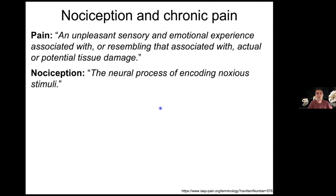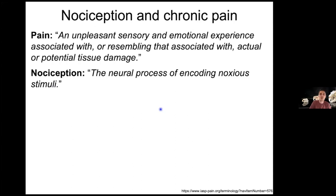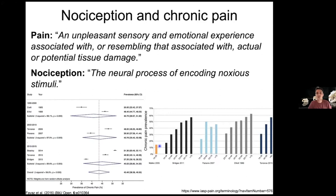You might wonder, ethically, why study pain in rodents when we have painkillers? A meta-analysis of studies in the UK shows that about 43% of the adult population experience chronic pain at some point in their lifetime. About two thirds of people administered painkillers find they don't work — either causing bad side effects or not eliminating the pain. And the prevalence of chronic pain increases with age across all studies, so that's something for us all to look forward to.